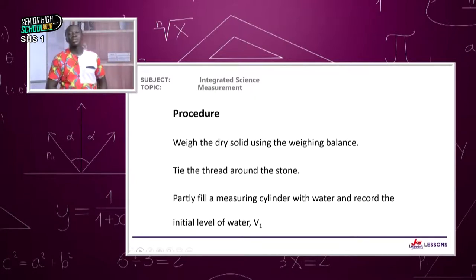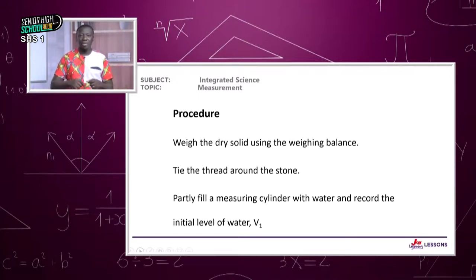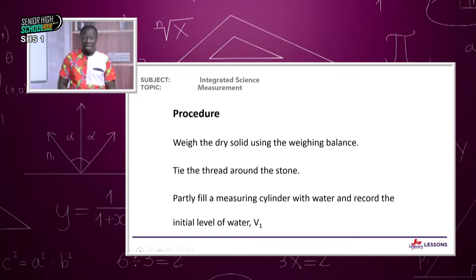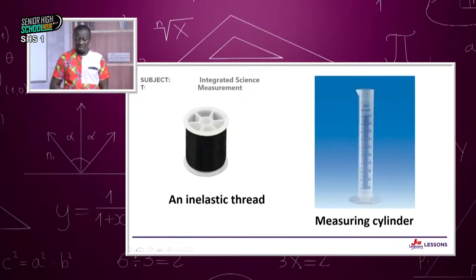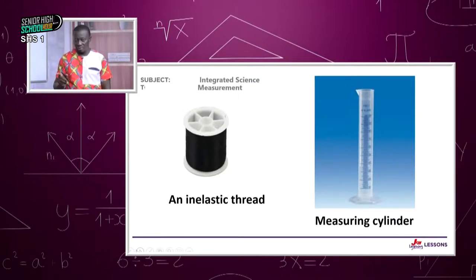Next, tie the object with a piece of thread, then gently lower it into a measuring cylinder containing water. Partially fill the measuring cylinder with water — make sure there's enough to cover the solid — and note the initial volume V1.